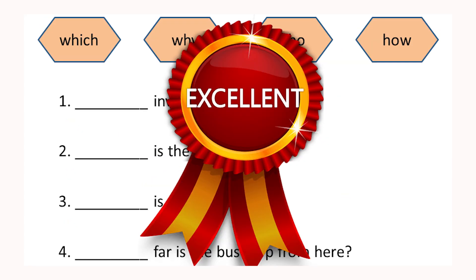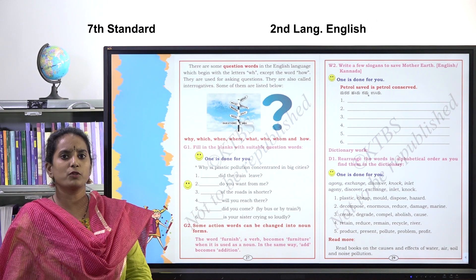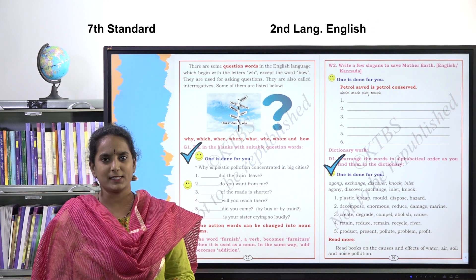Now is your homework time. In your textbook, come to page number 27. G1: fill in the blanks with suitable question words — write this in your notebook and try to find the answers. Next one is D1: rearrange the words in alphabetical order — you can take help of the dictionary. Do your homework and show it to your teacher at school. Thank you, children. I will meet you soon with a new lesson. Bye.